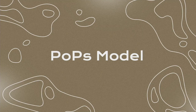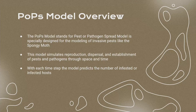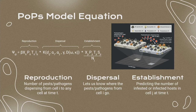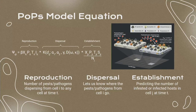For this model, I will be using a POPs model to simulate the spongy moth invasion. The POPs model stands for Pest or Pathogen Spread Model and is specially designed for invasive pests like the spongy moth. This model simulates reproduction, dispersal, and establishment of pests and pathogens through both time and space. With each time step, the model predicts the number of infested or infected hosts as output. You can see a visual representation both in symbols and in a picture — reproduction represents pests dispersing from cell I to any cell at time T, dispersal indicates where those pests go, and establishment predicts the number of infested hosts in cell J at time T.